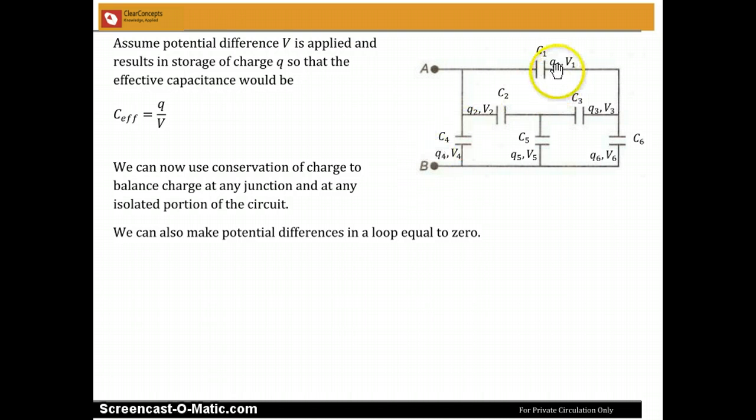Similarly, let us say I am considering this junction. So what is flowing here? I have a Q1 flowing from here, I have a Q3 flowing from here, and then a Q6 accumulating here. So I can say Q1 plus Q3 is equal to Q6. Similarly, with each of these junctions, I would be able to get an equation. There are actually only four junctions to consider, and so there will be four equations there.